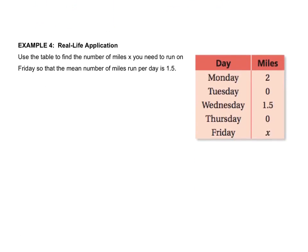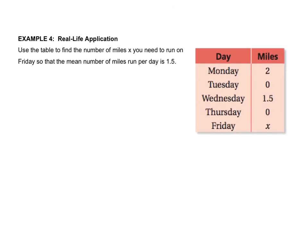But let's move on to the last example, number 4. We have to use the table to find the number of miles you need to run on Friday so that the mean, mean, remember, means average. The mean number of miles run per day is 1.5. So how do you find an average? Well, if you forgot, I'll tell you. It's you take the total and you divide by the number of items, which in this case will be 5, and then that equals the average.